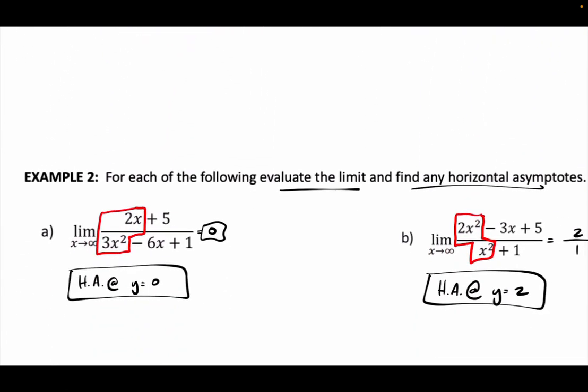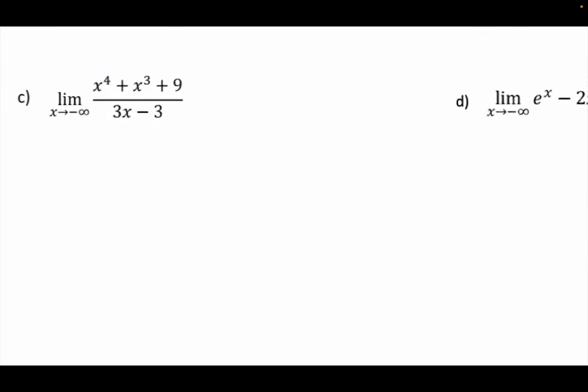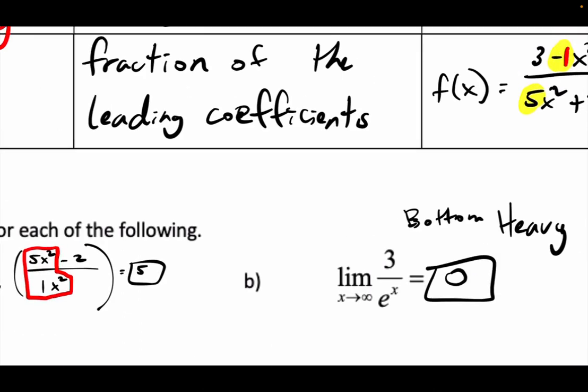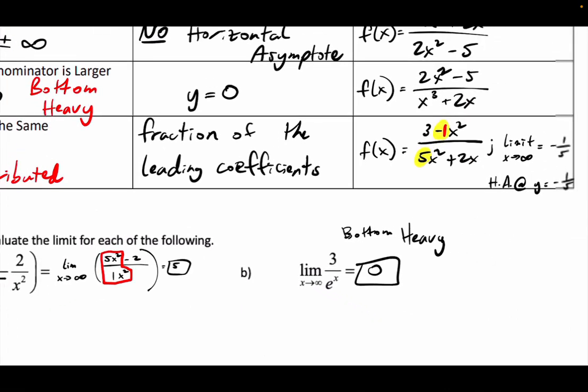So we did example two C. The limit as x approaches negative infinity — so we're going this way. As x gets as far left as it can possibly go, what is y doing? The degree on top is four — x to the fourth. The degree on the bottom is one. So it's going to be top-heavy. We go back to our table and see what top-heavy looks like.